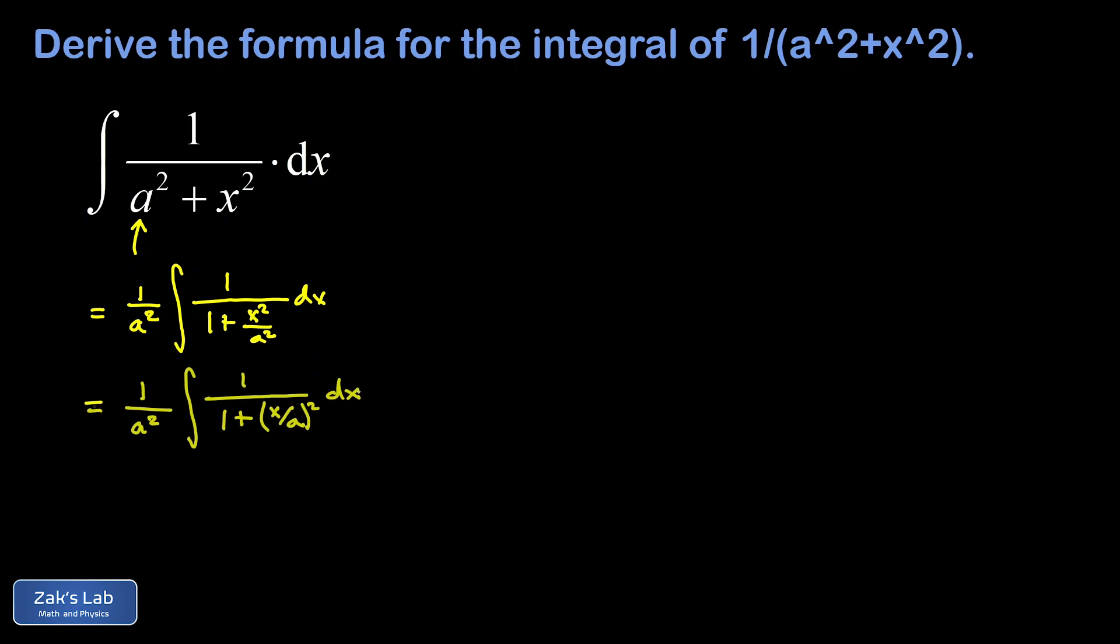That x squared over a squared can be written as x divided by a all squared. Now this integrand fits the form of the integral that gives us the inverse tangent function.